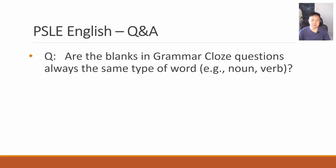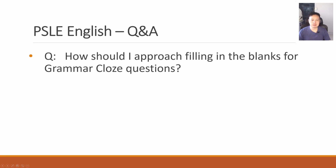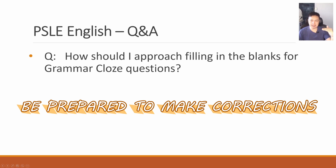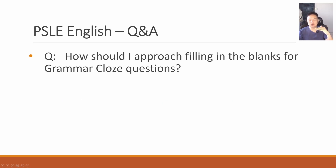Are the blanks in grammar cloze questions always the same type of word? Not always — students tend to have difficulty with certain prepositions, so don't overlook them. How should I approach filling in the blanks? Try to fill in the confident answers and use the process of elimination, but be prepared to make corrections and adjustments. For example, if you select A for your first answer and you continue doing the exercise and realize the last blank could also be A, you might need to go back to the first blank and change it. A lot of students, once they fill in the answer, are not willing to go back and revisit — that will result in a lot of marks being lost.